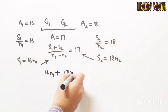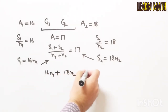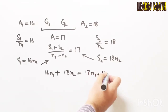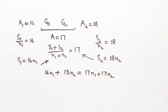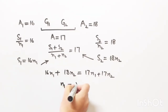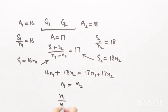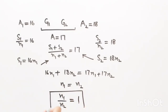Now we will simplify this: 16·n1 + 18·n2 = 17·n1 + 17·n2, which gives us n1 = n2. We can write this as n1 / n2 = 1, which is the required answer — the ratio of the number of students who joined the class to the number of students who were initially in the class is 1:1. Like the video, share it, and don't forget to subscribe to my channel. Thank you so much!